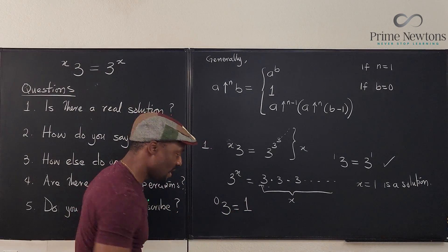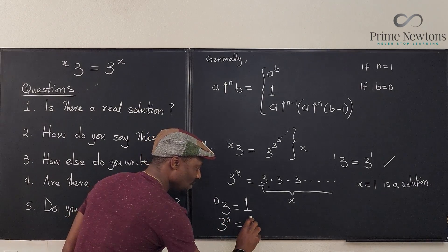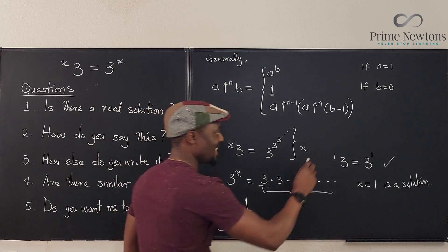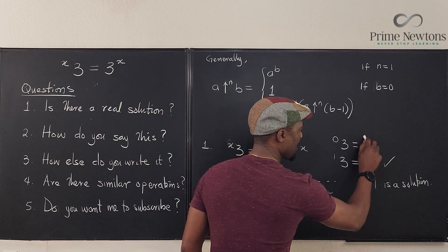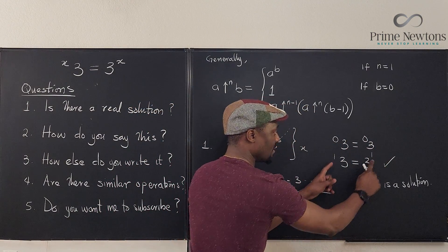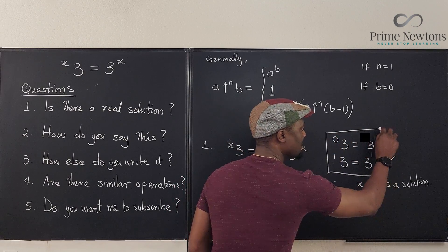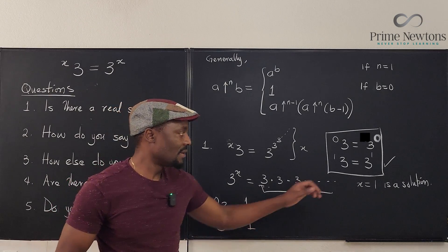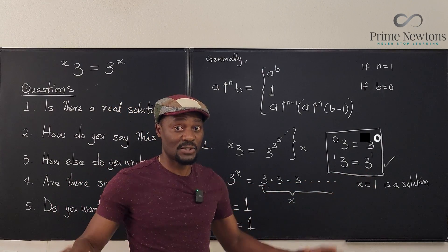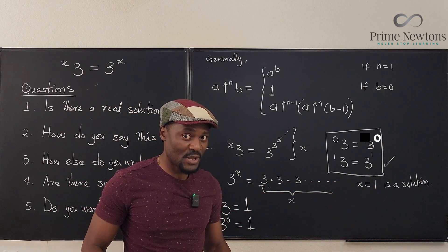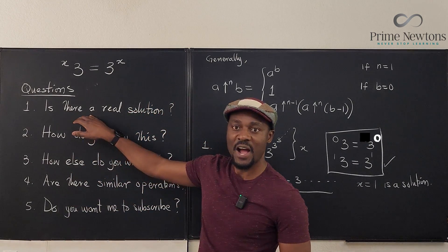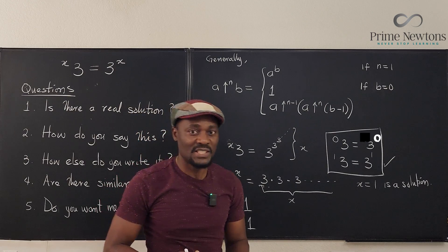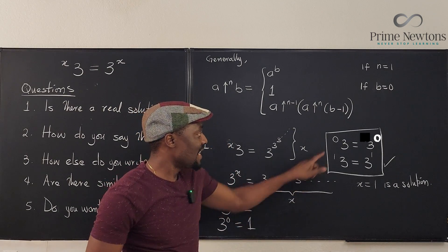And we know that anything raised to power zero is also equal to one. So as you can see, there are two answers to this, zero and one. These are the two cases in which tetration will be equal to exponentiation as far as real numbers are concerned. So we got the first answer out of the way.